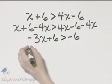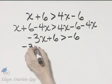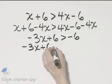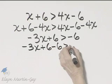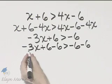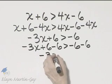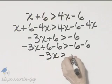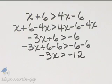Now let's subtract 6 from both sides. So here's my left side and I'll subtract 6, and here's my right side and I'll subtract 6. So on the left side I have negative 3x is greater than negative 12.